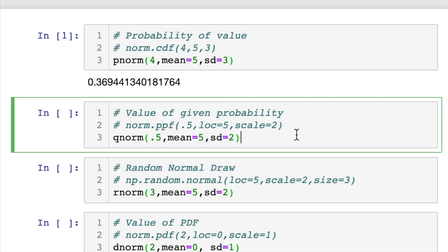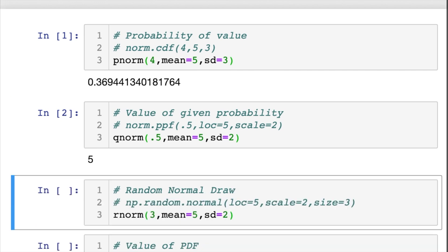Okay, moving on to qNorm, which is actually the inverse of what we just did. So instead of giving it a value, you give it a probability, and it will return the value associated with that probability.